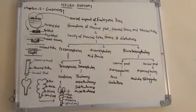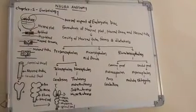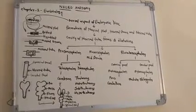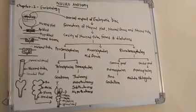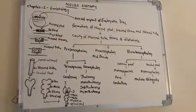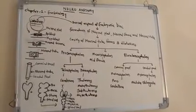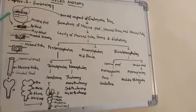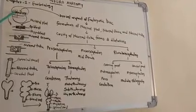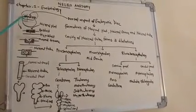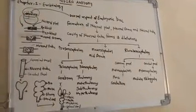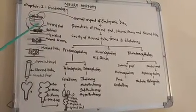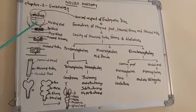As we have completed the embryology portion, we already know that the human body is developed from the three-layered disc. The three layers, or the germ layers, are the ectoderm, endoderm, and the mesoderm. But before the stage of the three-layered disc there is a two-layered embryonic disc. These two layers are the upper layer — the epiblast — and the lower layer — the hypoblast. Above the epiblast there is a cavity called the amniotic cavity, and below the hypoblast there is a cavity called the yolk sac.